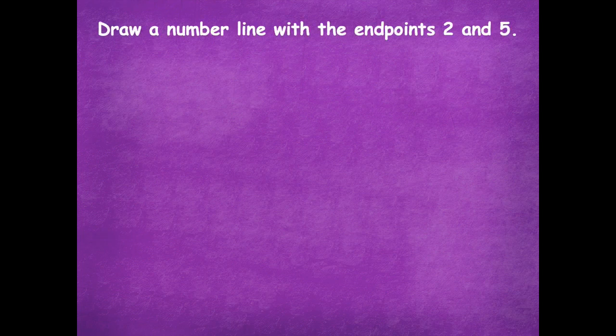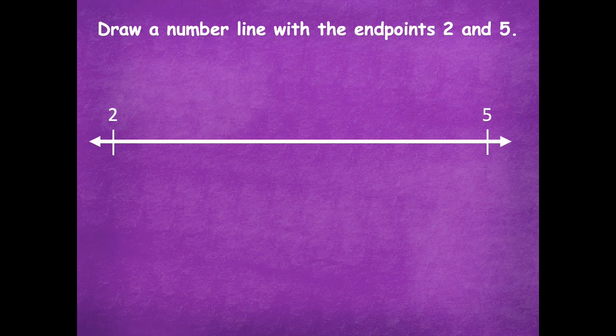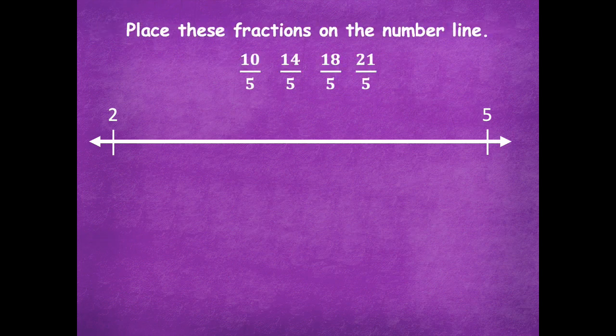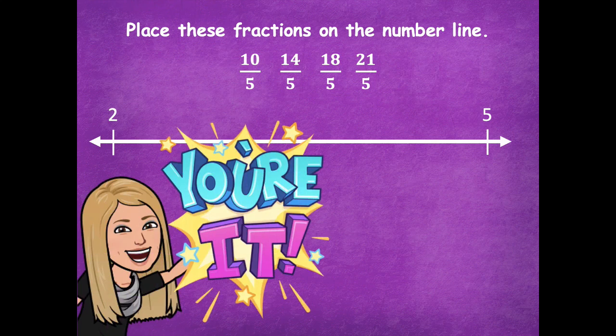We're going to draw a number line with the endpoints of two and five this time, and then place these fractions on the number line. What fractional unit are we partitioning into? It's fifths, because each one of those fractions is fifths. Before you start, label those missing wholes — you only have two and five right now — then partition each part into five equal parts, and label your fractions. Click play when you're ready to go over it together.